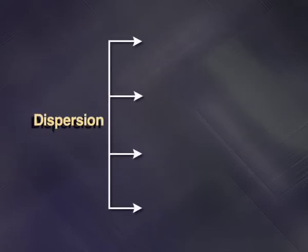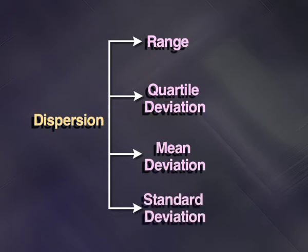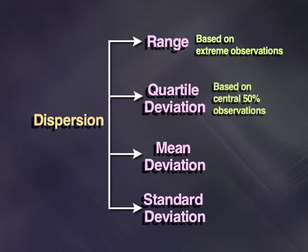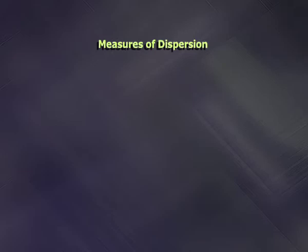We shall now understand the different measures of dispersion: range, quartile deviation, mean deviation and standard deviation. Range is based on extreme observations. Quartile deviation is based on the central 50% of observations. Mean deviation is based on the absolute deviation, while standard deviation is based on squared deviation. We shall now look at the different formulas for measures of dispersion.